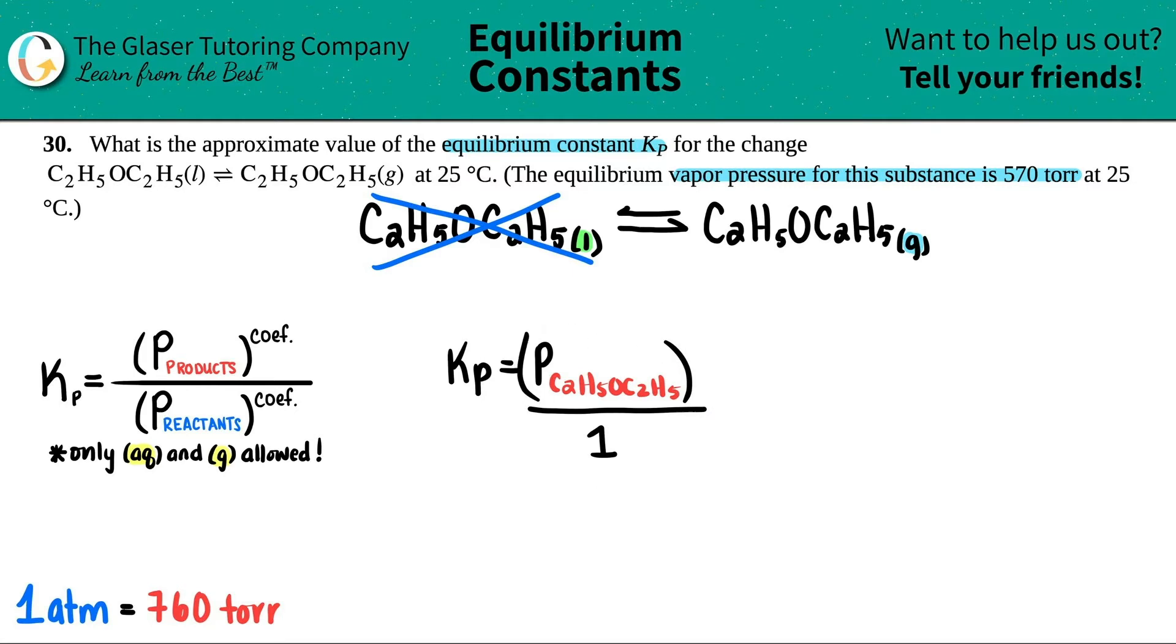Let's simplify this. I can just say that the Kp is equal to just the pressure. I can get rid of these parentheses - it's just equal to the pressure of the C2H5OC2H5. And they did tell me that the equilibrium vapor pressure was 570 torr.